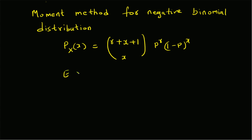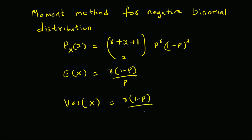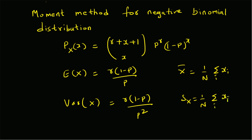In theory, the mean value of this random variable is given by r times (1 minus p) divided by p, and the variance is given by r times (1 minus p) divided by p squared. These are the moments from theory — the first is the first moment and the second is the second centralized moment, that is the variance. From data, the sample mean is given by the arithmetic average and the sample variance is (1/n) times the summation of (x_i minus x-bar) squared.